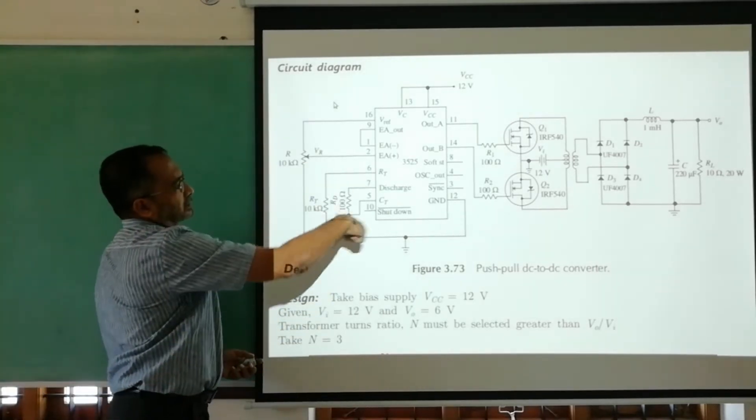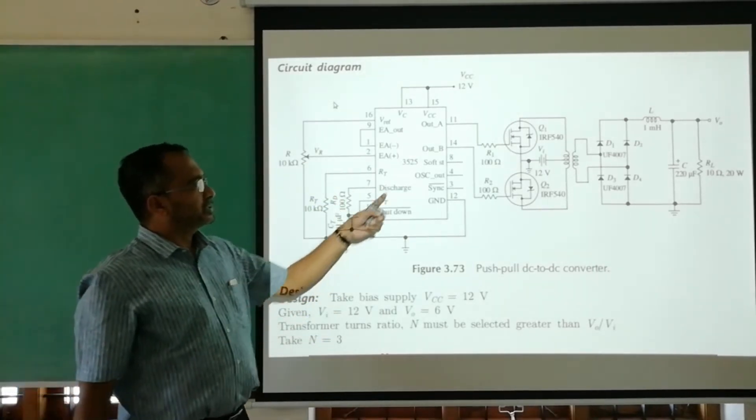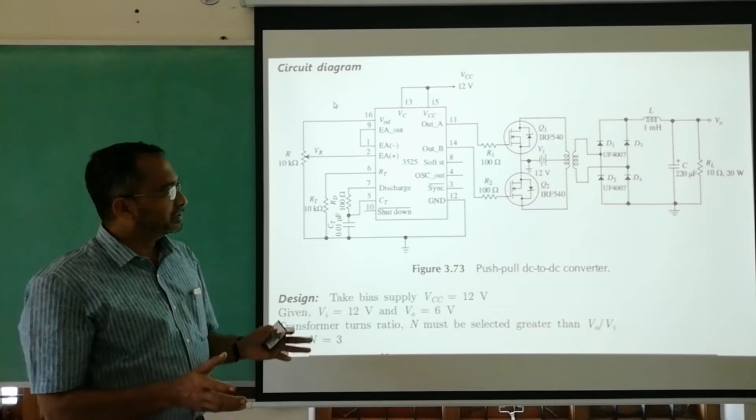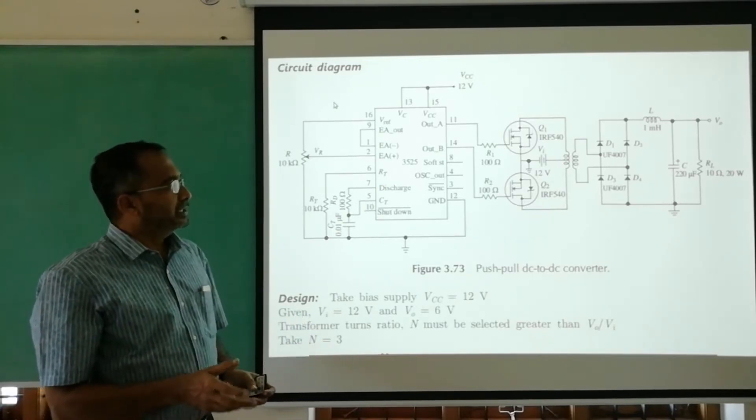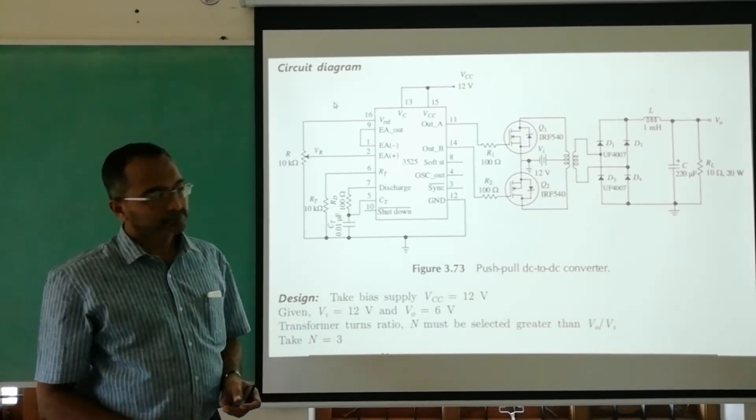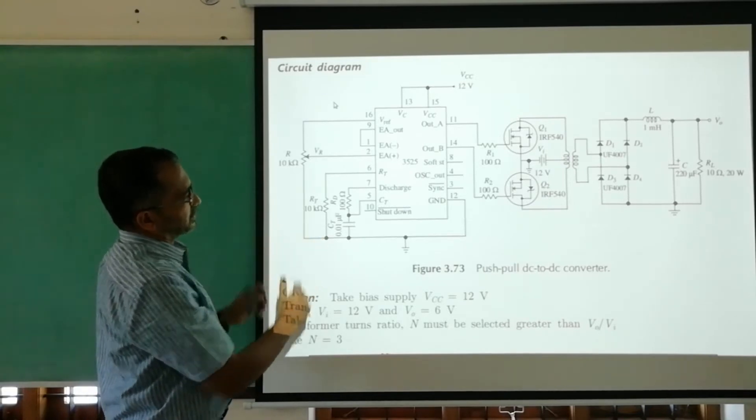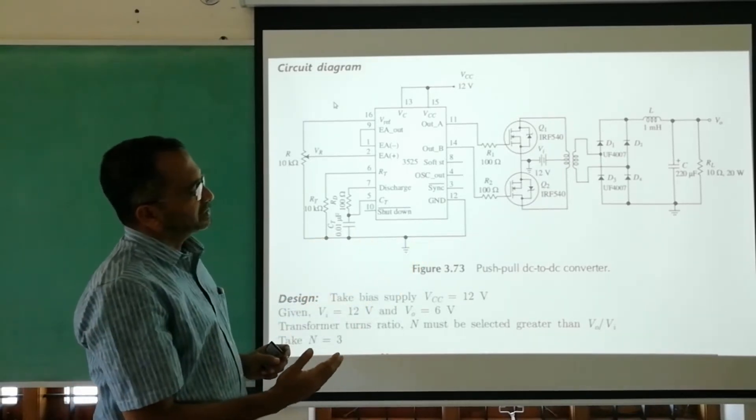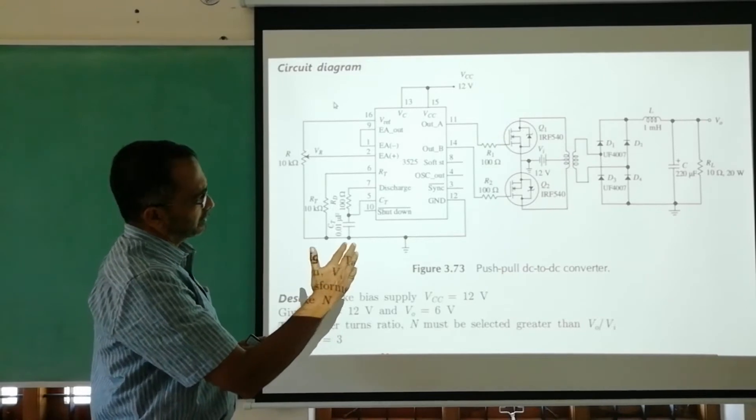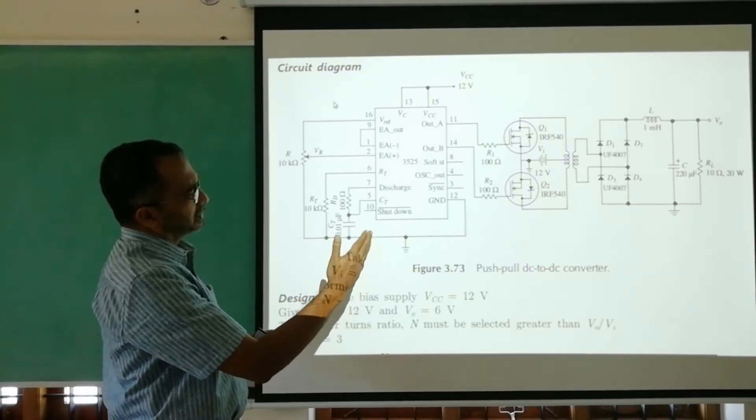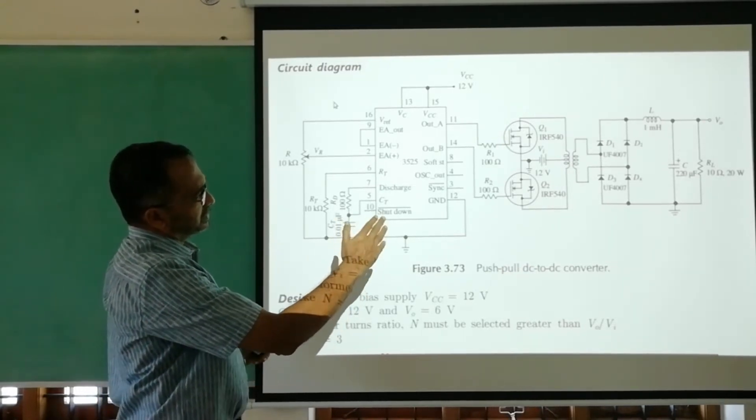Here this circuit which uses 3525 IC is for driving the gates of switches Q1 and Q2. This is the gate drive circuit. Then comes a converter which converts from DC to AC.